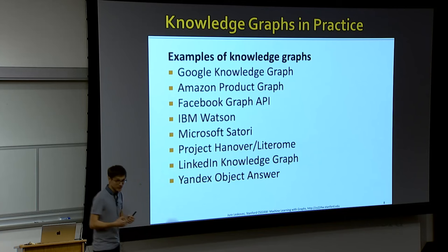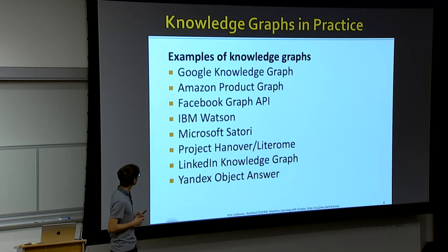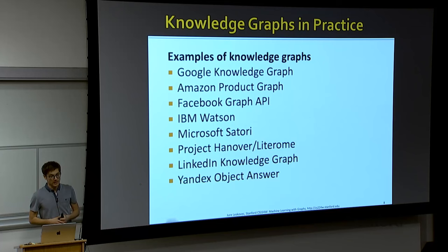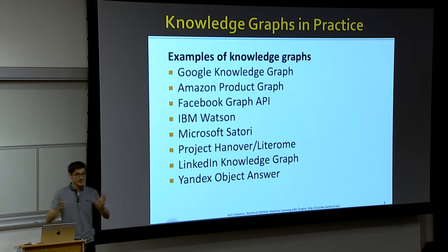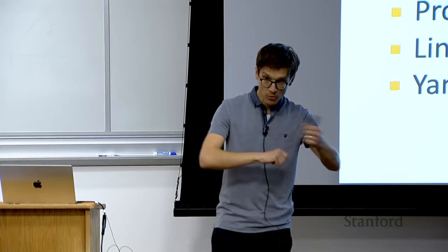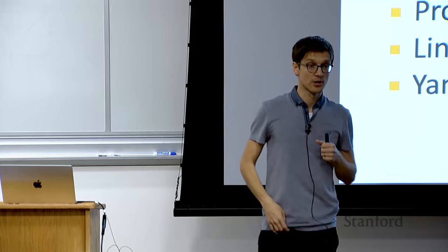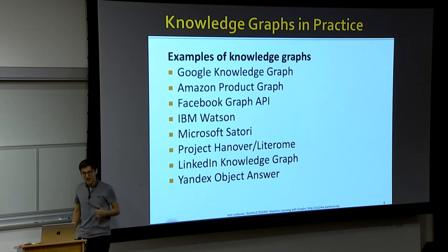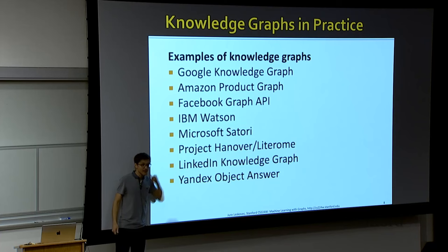There are many other knowledge graphs. Google uses a knowledge graph when you type questions into the search box. Amazon has a knowledge graph of all their products, their properties, and sellers. Facebook calls this the Facebook Graph API — it's not only people and their relationships, but also what schools people went to and what locations they attended. All of this is resolved to the level of entities. There are other examples from IBM Watson, Microsoft Satori, LinkedIn, and Yandex.